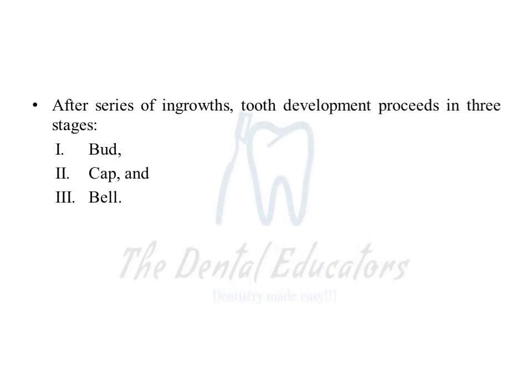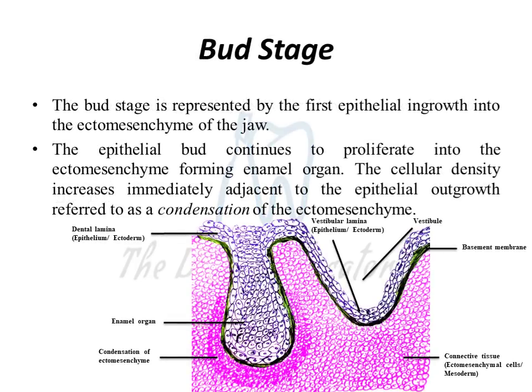Once the ingrowths are formed, the development of the tooth continues in three different stages: the bud, the cap, and the bell stage. The name represents the shape of the tooth germ. The bud appears like a flower bud; the cap appears like a cap sitting over a ball; and the bell resembles the hand-rung bells of old times.